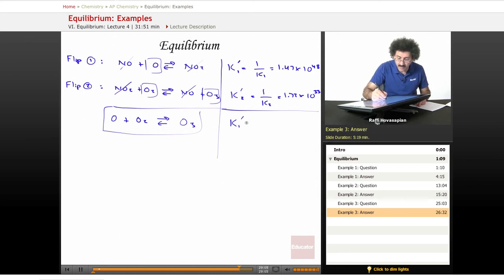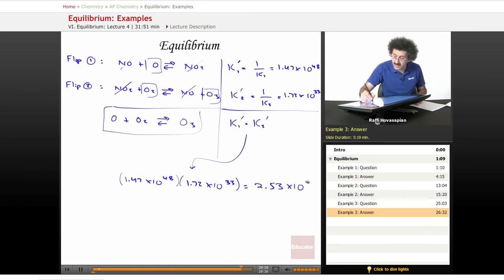Now in order to get the final equilibrium constant, I have to—I don't add these—I multiply them. It becomes K1 prime times K2 prime. So it equals 1.47 times 10 to the 48th times 1.72 times 10 to the 33rd, and I end up with getting some huge number, if I'm not mistaken, 2.53 times 10 to the 88th.